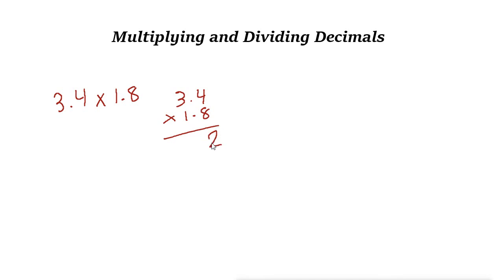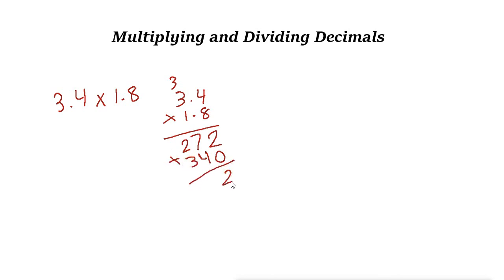8 times 4 is 32, write 2 keep 3. 8 times 3 is 24, plus 3 is 27. Put 0 and do the same for 1: 1 times 4 is 4, 1 times 3 is 3. Now add these two: you get 2, then 4 and 7 is 11, write 1 keep 1, and that gives 612.